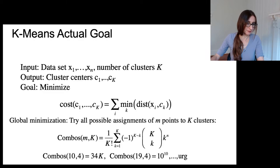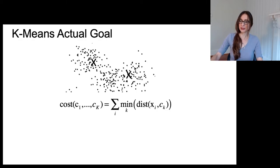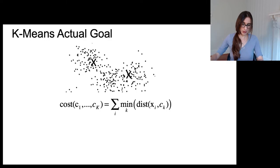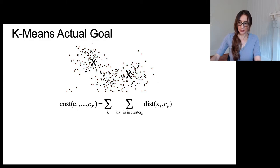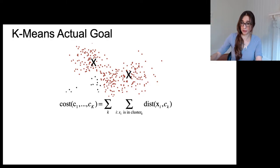Looking at this cost again: it's a sum over all points of the distance to the nearest cluster center — just adding up all those points one by one. I could count them left to right, or I could change the order and count the points for each cluster one at a time. That's equivalent — I count the points for one cluster, then the points for the other cluster.